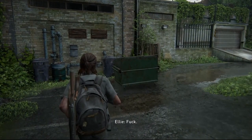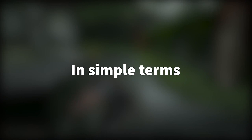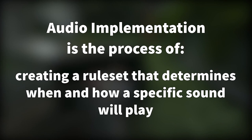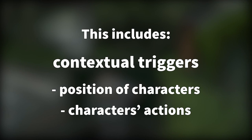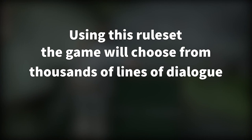This is where we jump into the more technical side of game development and take a look at how some of the systems were implemented in The Last of Us Part 2. In simple terms, audio implementation is a process of creating a ruleset that determines when and how a specific sound will play. This includes contextual triggers such as the position of characters and their actions, and will usually apply additional processing to the sound to fit it into the game world, such as reverb to match the game environment. Using this ruleset, the game will choose from thousands of lines of dialogue and decide exactly which line or lines should be played.